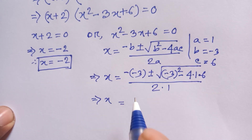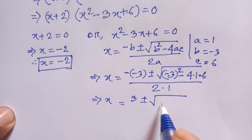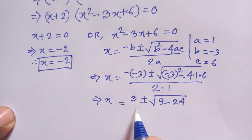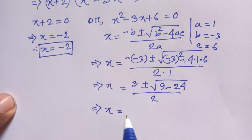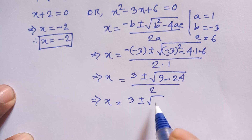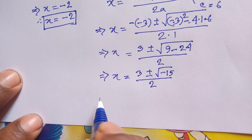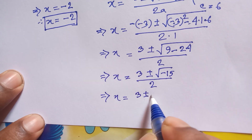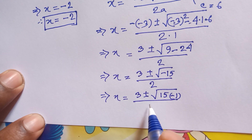This simplifies to x equals 3 plus or minus the square root of 9 minus 24, divided by 2. So x equals 3 plus or minus the square root of minus 15, divided by 2.